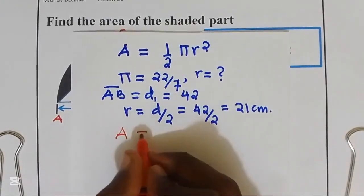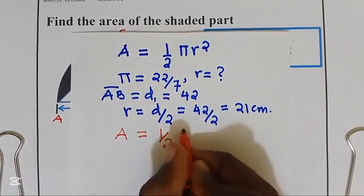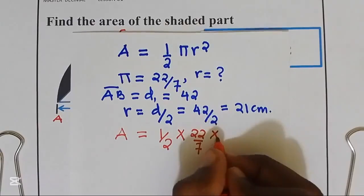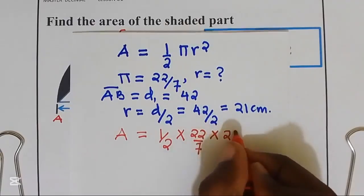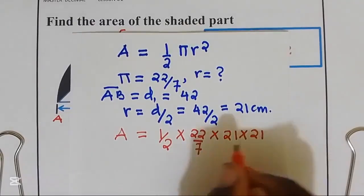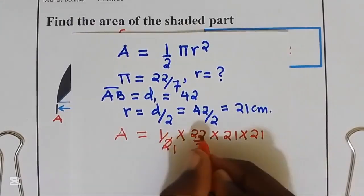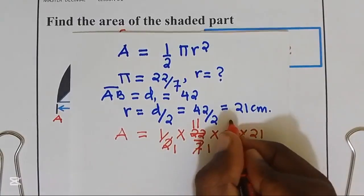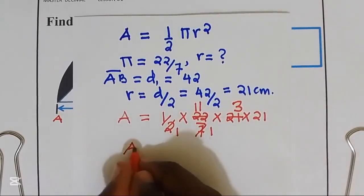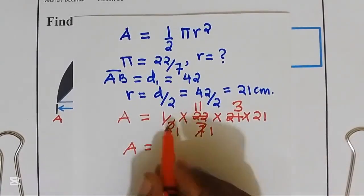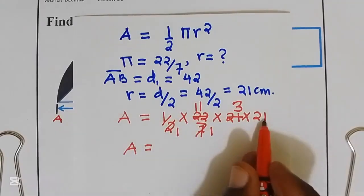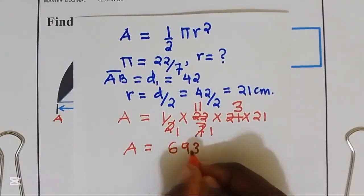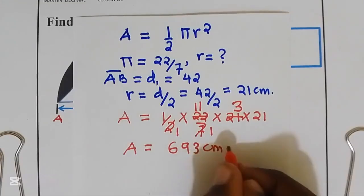Our area will be equal to a half times π, that is 22 over 7, times radius squared, that is 21 multiplied by 21. Simplifying: one half, 22 over 7, gives 11 over 7, and 21 over 7 gives 3. So the area of a semicircle is equal to 11 multiplied by 3 multiplied by 21, which gives us 693 cm squared.